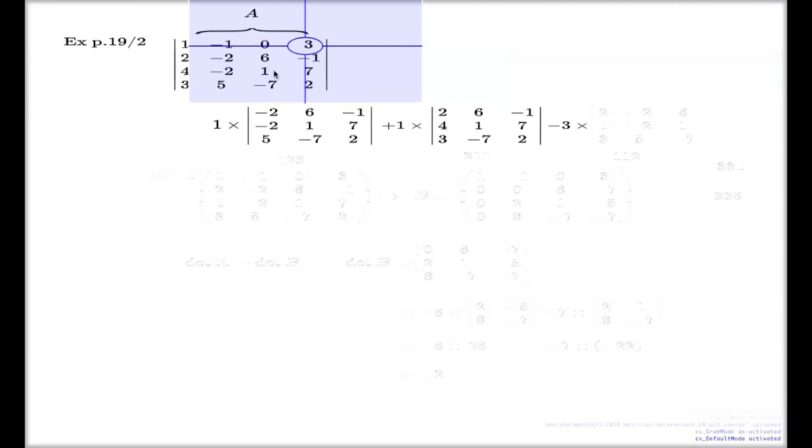But now, the last position here, number 3, due to sign alterations, it will come with minus, because it's a first row and fourth column, 1 plus 4 is 5, odd number, that's why we have the negative sign, negative 3, and this is a minor next to it.